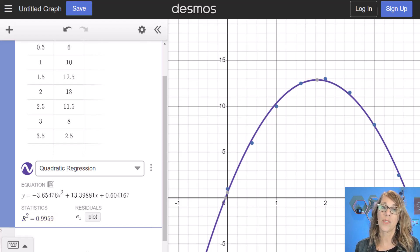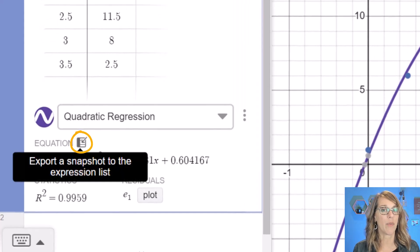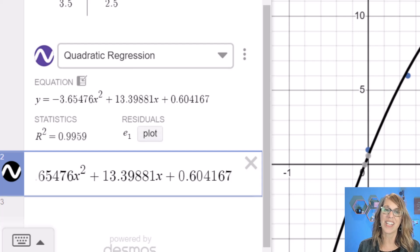Now you might also want to work with the regression equation. And I can copy that regression equation and work with it by clicking on the symbol here next to the equation word. I'm going to click on that and it puts it down into one of my empty cells.